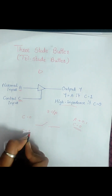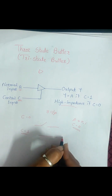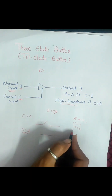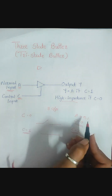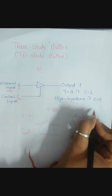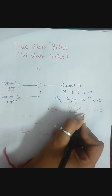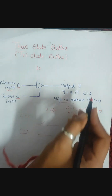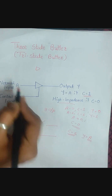If C is equal to one, the circuit works as a closed circuit, and the output is based on the input — whatever the input is, the same output you get. So if C equals one and A equals zero, then Y equals zero. If A equals one and C equals one, then Y equals one. So if the control input is one, you get whatever the input is.